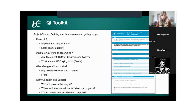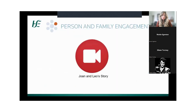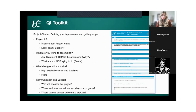Our QI toolkit also has a project charter, which helps you define your improvement project and get support. It coaches you on your aim statement, which we recommend should be SMART, what you are and are not trying to do in your scope, what changes you want to make, who's going to sponsor the project — because governance is incredibly important to establish from the beginning — and where you can access advice and support.